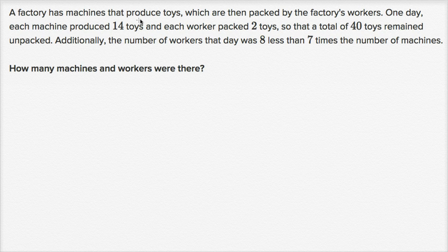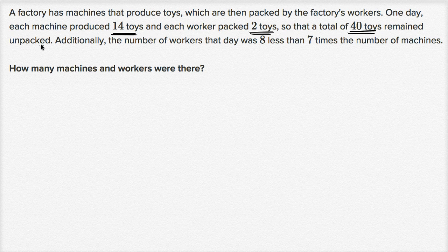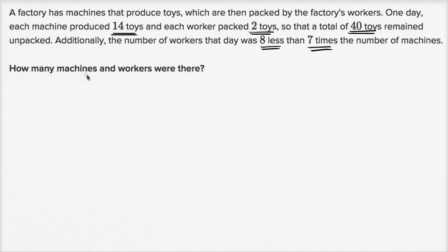A factory has machines that produce toys, which are then packed by the factory's workers. One day, each machine produced 14 toys and each worker packed two toys so that a total of 40 toys remained unpacked. Additionally, the number of workers that day was eight less than seven times the number of machines. How many machines and workers were there?